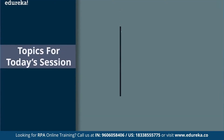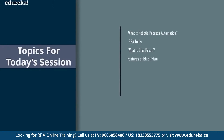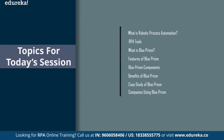Let me quickly cover all the topics for today's session. We'll start by understanding what exactly robotic process automation is, then cover the various tools RPA offers. Out of all these tools, we're going to focus on Blue Prism. I'll tell you what Blue Prism is, discuss its features, cover the different Blue Prism components, and then tell you the benefits of Blue Prism. After understanding the basics, I'll end the session with a case study of a company using Blue Prism and finally the major multinational companies using it.